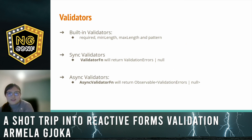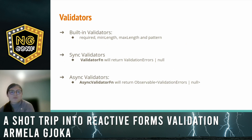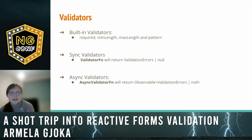If we were to categorize the validators, we would go for three categories. We have built-in validators that come out of the box, then we have synchronous validators — which is basically a validator function — and async validators, which is an async validator function. The difference between the last two is that the synchronous one returns a validation error directly, while the async one returns either an observable or a promise of validation errors.